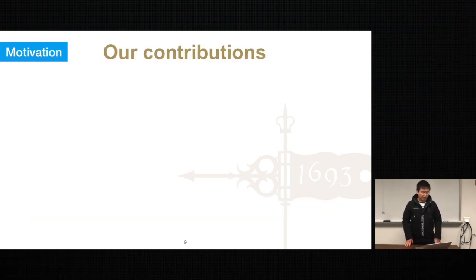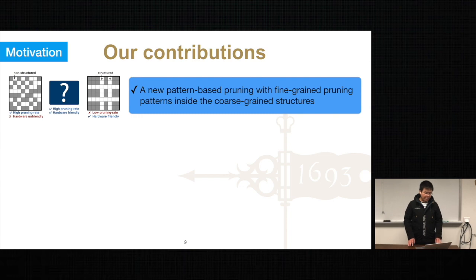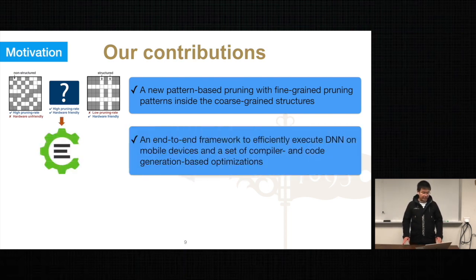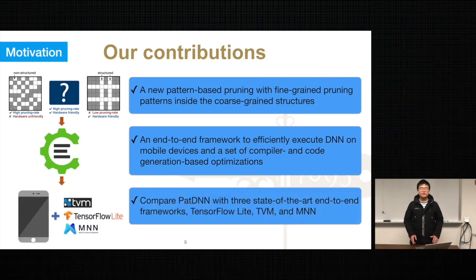In this paper, we propose PatDNN. It mainly consists of three contributions: a new pattern-based pruning with fine-grained pruning patterns inside coarse-grained structures; an end-to-end framework to efficiently execute DNN models on mobile devices; and compiler and code generation-based optimization. Finally, we compare PatDNN with three state-of-the-art end-to-end frameworks.